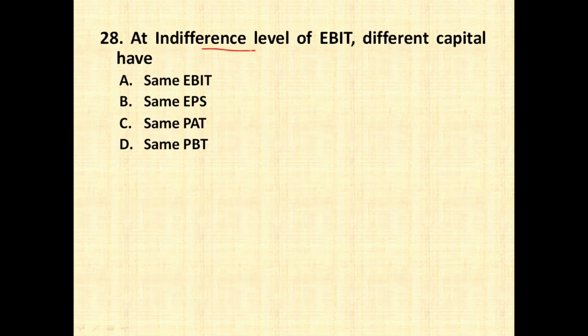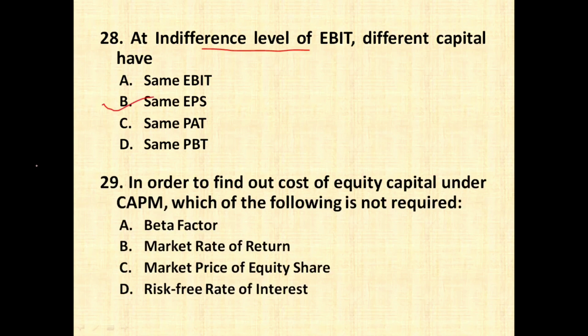The next question is: at the indifference level of EBIT, different capital structures will have what? The indifference point is a point where there will be different capital structures, but they are going to have the same EPS — that is, the same earnings per share.